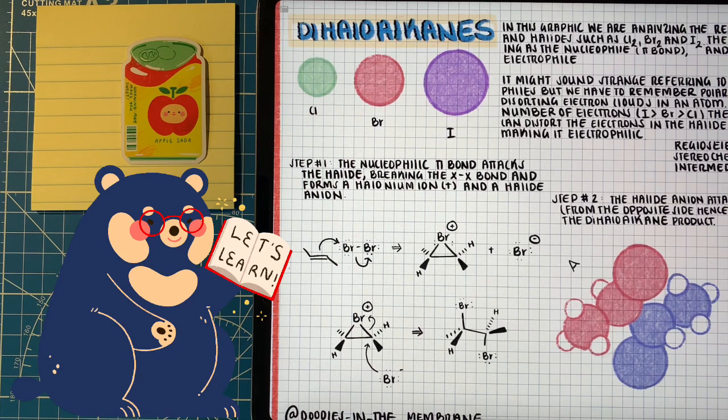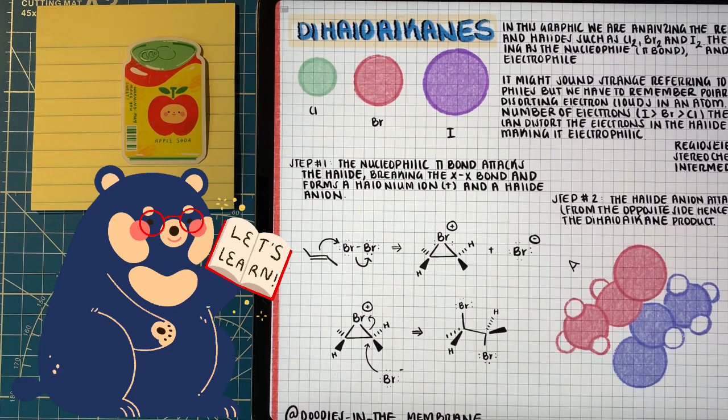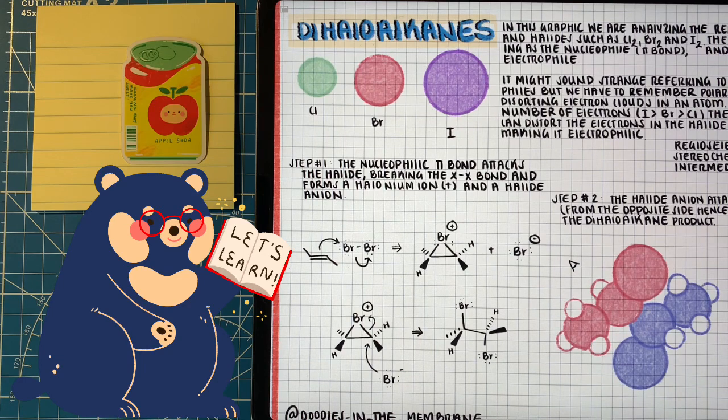For this reaction, it's bromine. So the pi electrons attack one of the Br atoms, throwing electrons from that bond onto the other one, leaving us with a halide ion and a cyclic intermediate.